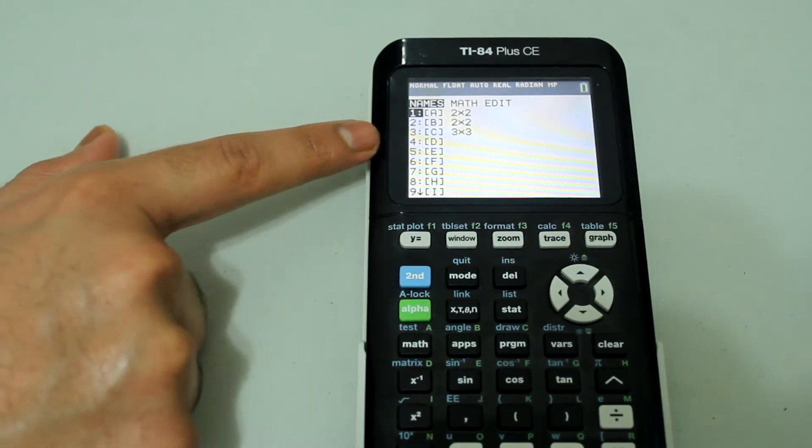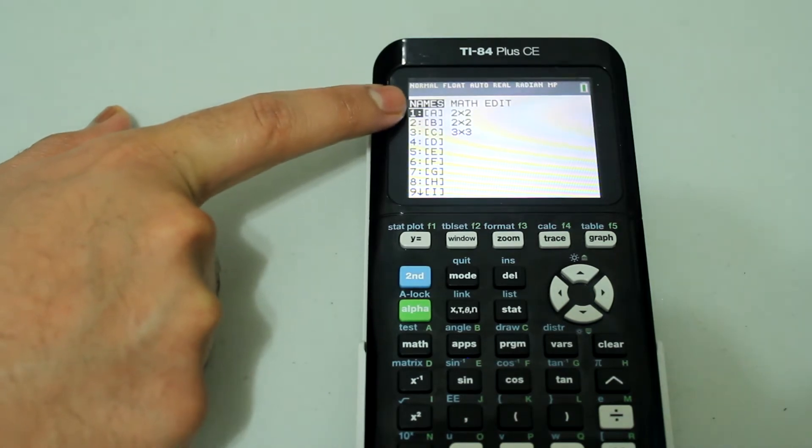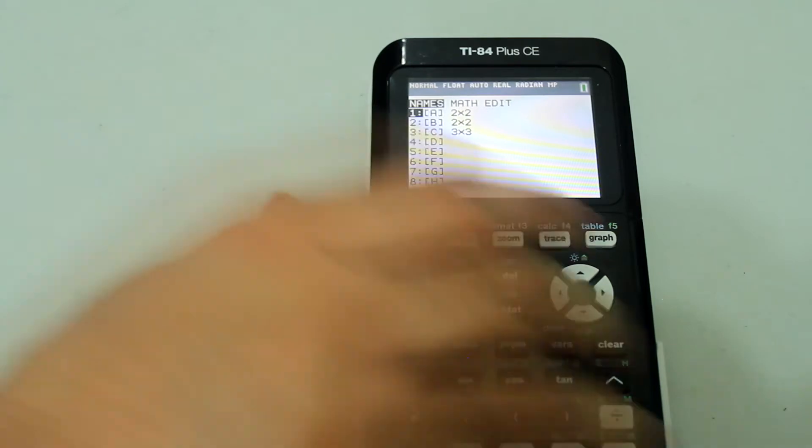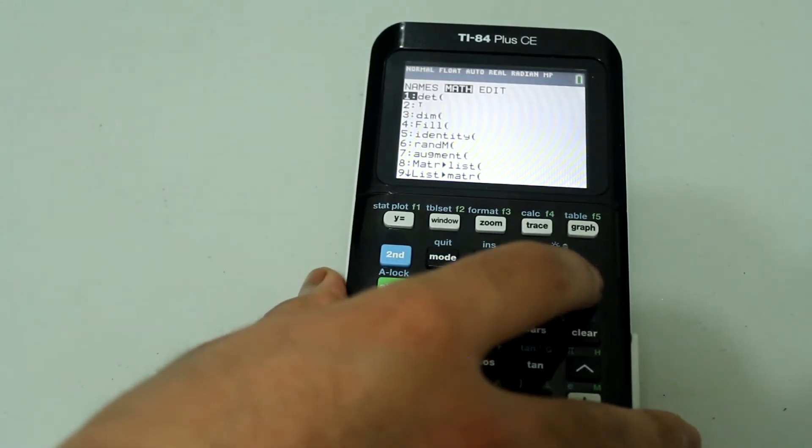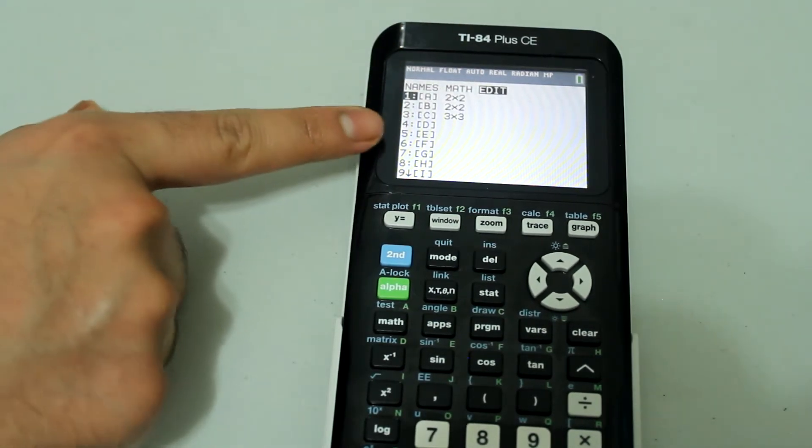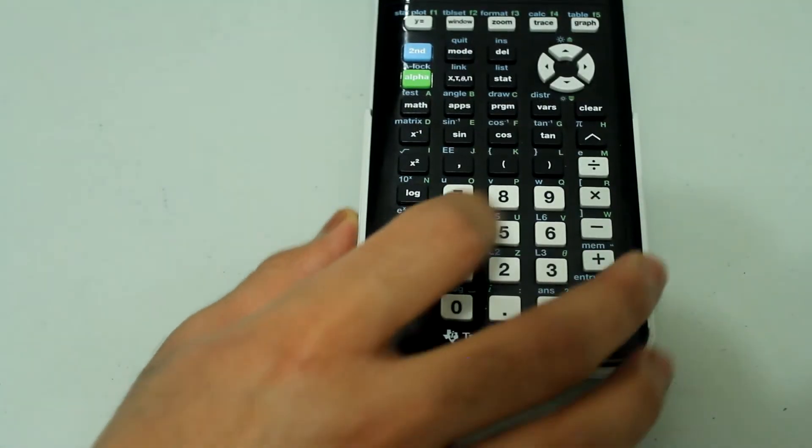I have inputs for matrix A, B, and C. So I'm going to choose matrix D and make a new matrix. I'm going to arrow over to the edit menu and then press number 4 on the number pad to select matrix D.